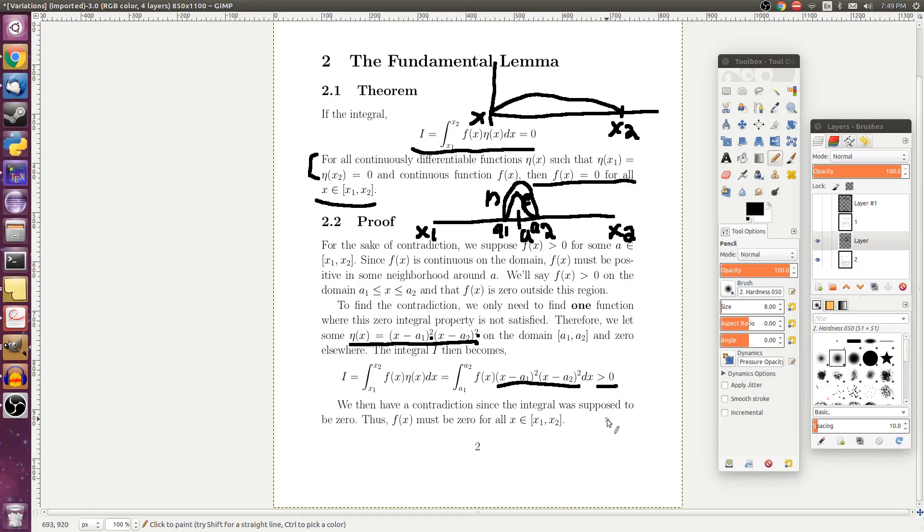But then we get a contradiction because that integral was supposed to be zero at the beginning. Because since we're doing a proof by contradiction, we're supposed to assume the first part. So in other words, our guess that f of x was not equal to zero for some point in that domain was wrong. So then f of x has to be zero for all x in this region. Then we have the theorem proved.